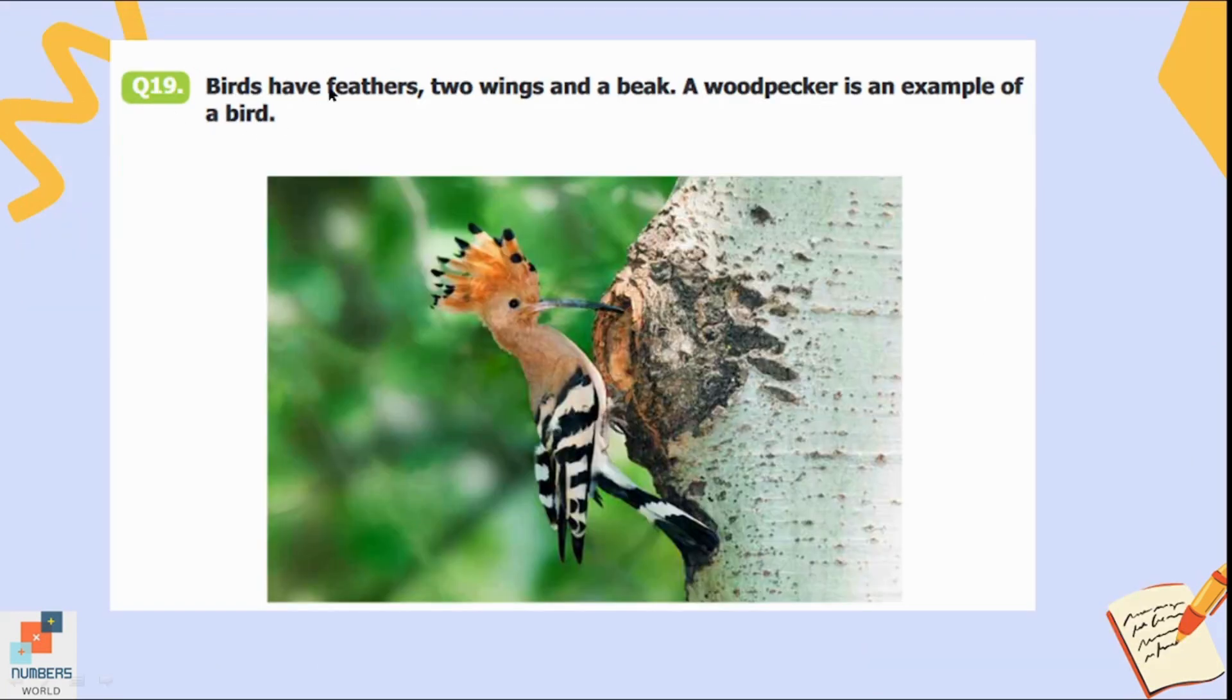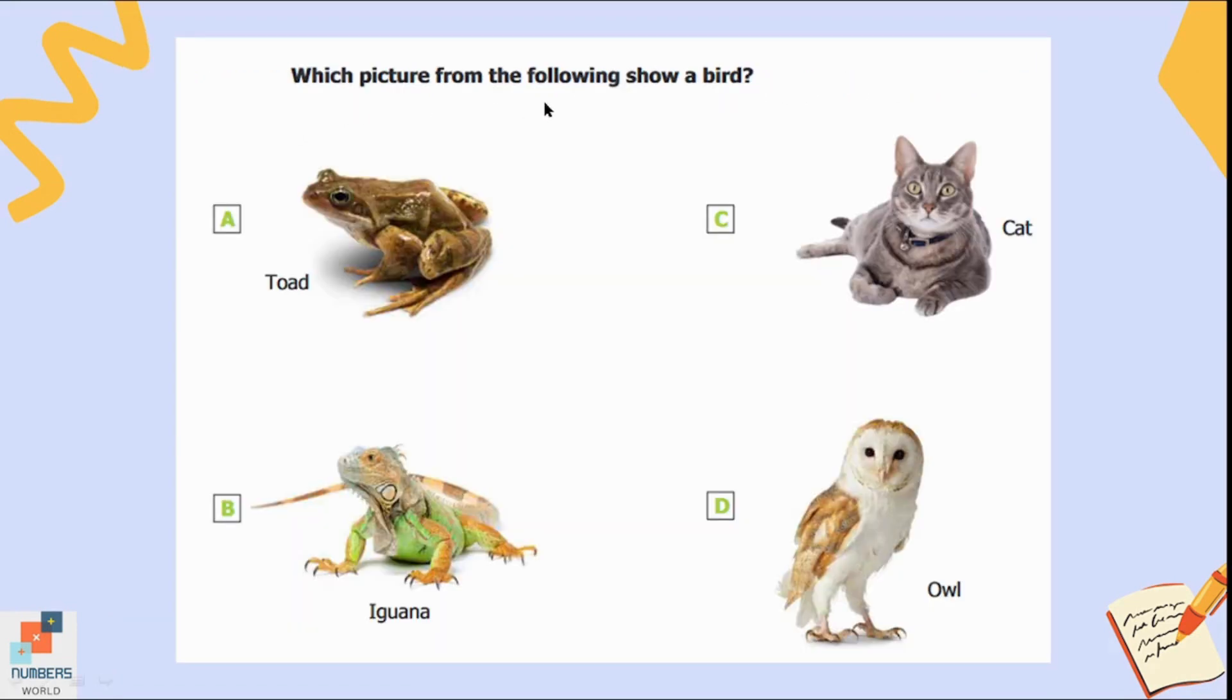Question number nineteen: Birds have feathers, two wings, and a beak. A woodpecker is an example of a bird. Which picture from the following shows a bird? Toad, iguana, cat, or owl. Of course we know that owl is an example of a bird, so option D is the correct answer.